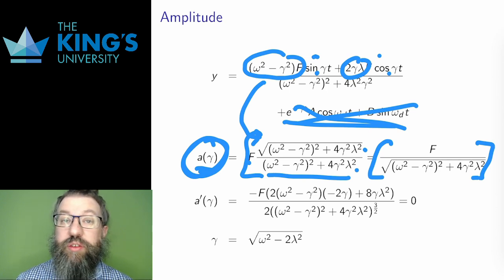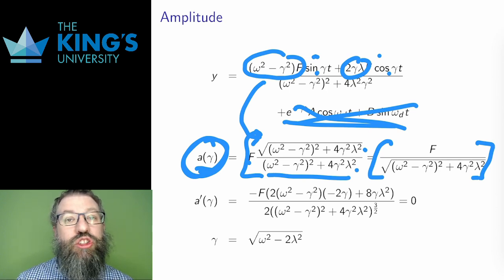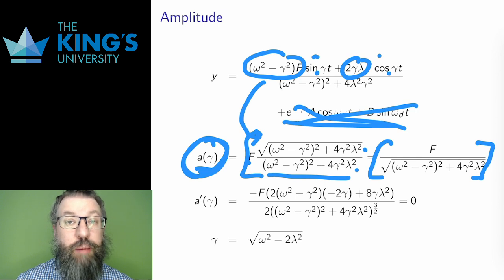Now, what is resonance? Resonance is choosing a forcing frequency gamma such that the amplitude is as large as possible. So I need to maximize the amplitude.